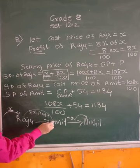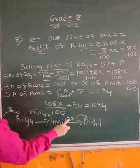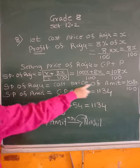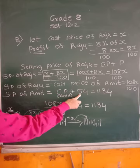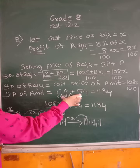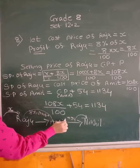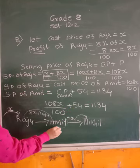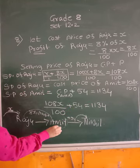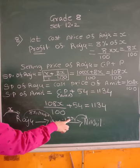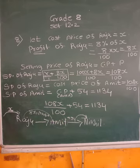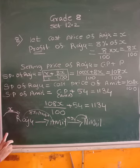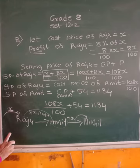Now Amit, what he has done? To this, he has added only 54, isn't he? Cost price of Amit is this, to this he has added only 54 for repairing. And then he has sold it to Nikhil. So this Amit, his cost price was 108X upon 100, to that he added 54 rupees. And he did not have any profit or loss. He has sold it to Nikhil.